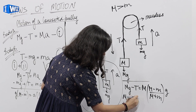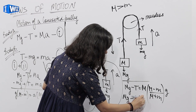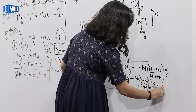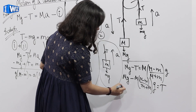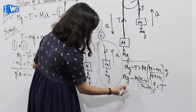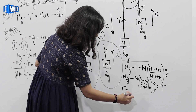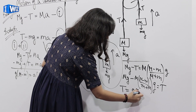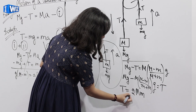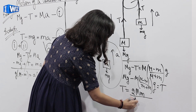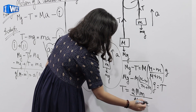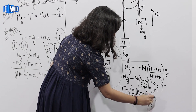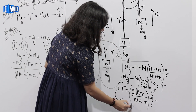This is the acceleration of the system. Now substituting the value of acceleration into equation 1: MG minus T equals M × [(M − m)/(M + m)] × G. On solving this expression, T is equals to 2Mm upon (M + m) into G. So this is the tension of the string of the pulley system.